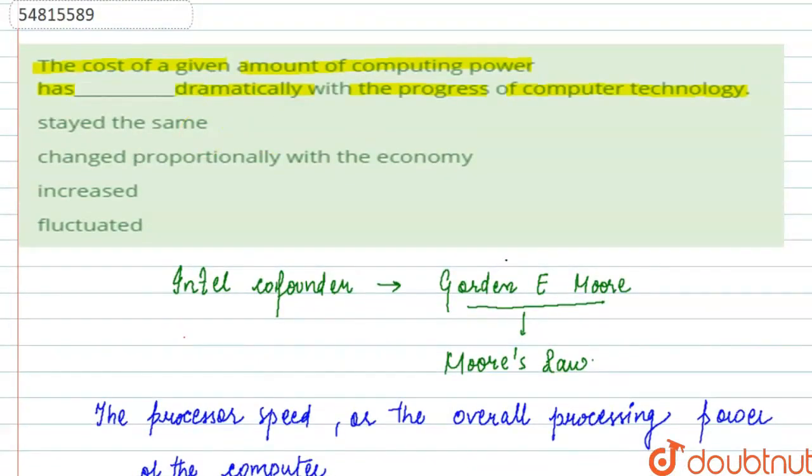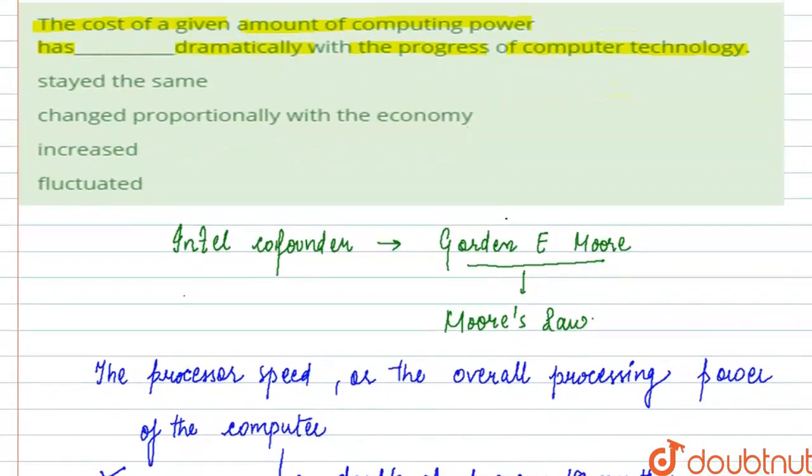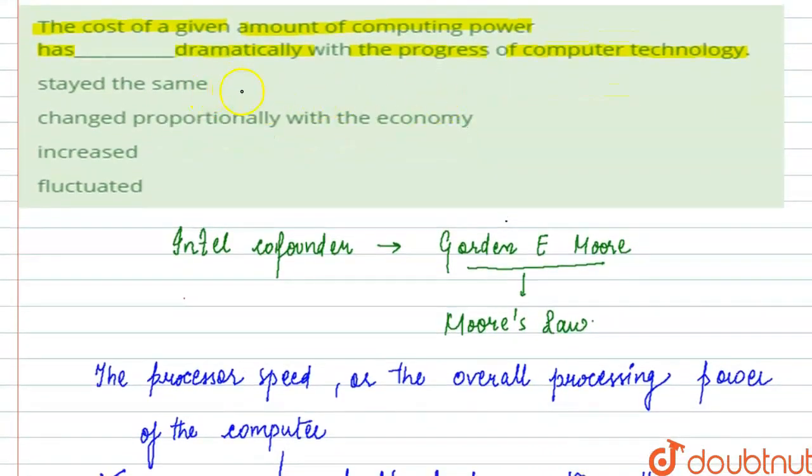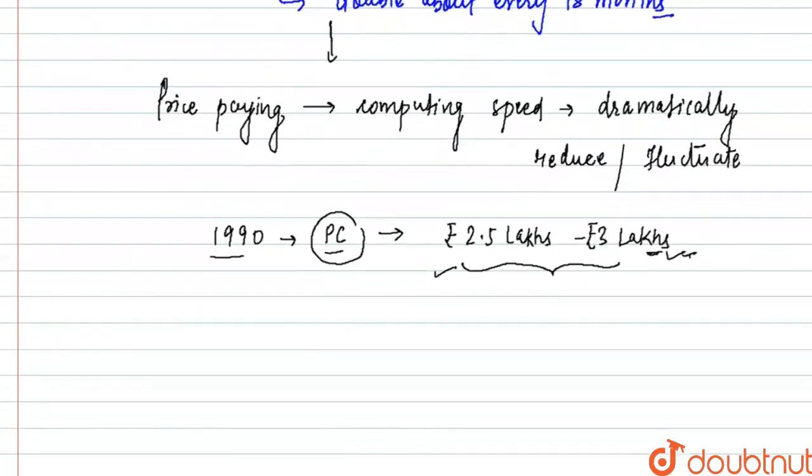And according to this law, if we keep this law in mind, then the correct option for this question would not be 'stayed the same,' not 'changed proportionally with economy,' not 'increased,' but 'fluctuated' is the correct option here. It has decreased a lot or fluctuated significantly. So this is the correct option. I hope this is clear to you, thank you.